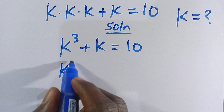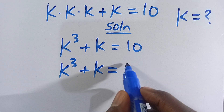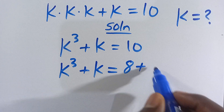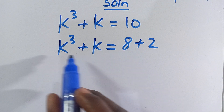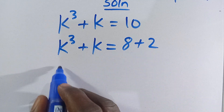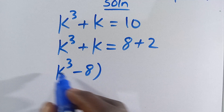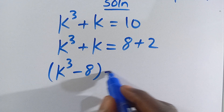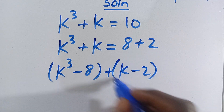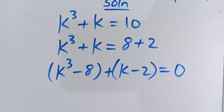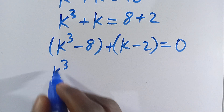We can write 10 as 8 plus 2. So we have k to the power of 3 plus k equals 8 plus 2. Let's take k³ together with 8, and k together with 2, grouping them in parentheses, and set everything equal to 0.